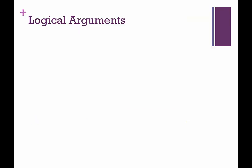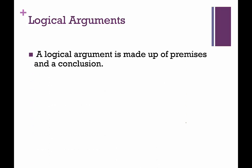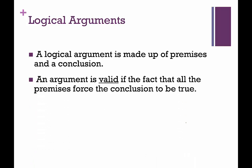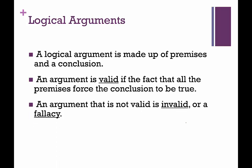First, a logical argument. A logical argument is made up of a set of premises and a conclusion. So we have this and this and this, therefore, whatever. So the things leading up to the conclusion would be the premises and then after the therefore would be the conclusion. An argument is valid if the fact that all premises force the conclusion to be true. So if we end up with all trues for our conclusion, then we would say that the argument is valid. An argument that is not valid is invalid or a fallacy, so you can use those words interchangeably.